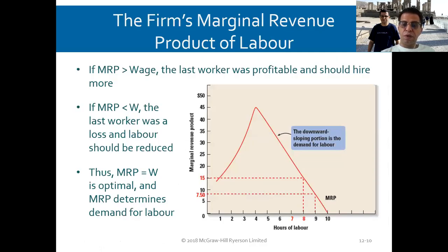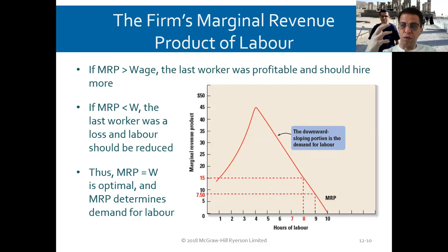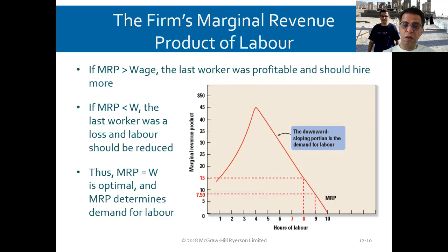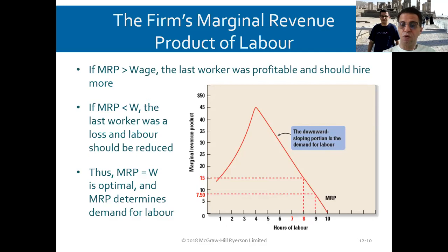For the firm's marginal revenue product of labor: if the MRP is more than the wage — say you bring one person, pay $10, but their additional output is worth $15 — then the MRP is higher than the wage, meaning the last worker was profitable and you should hire more. If the MRP falls below the wage, the last worker is a loss and labor should be reduced. Thus, the optimal point is where MRP equals wage, and the MRP determines the demand for labor.